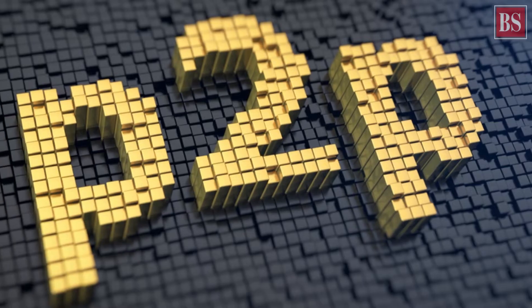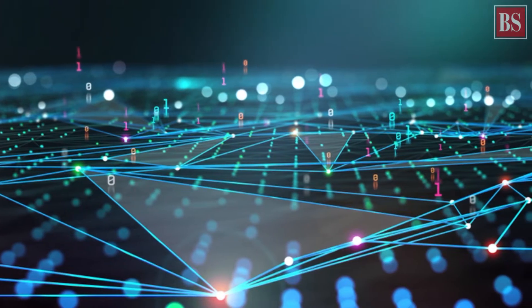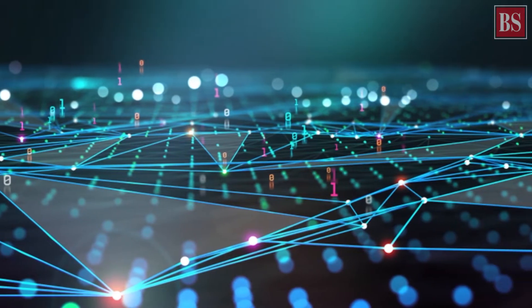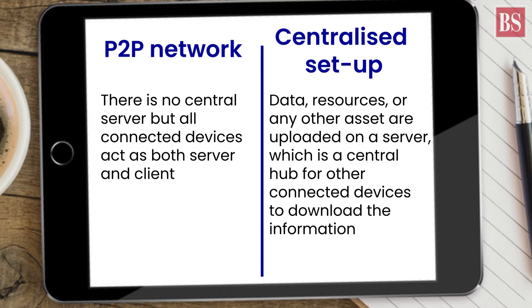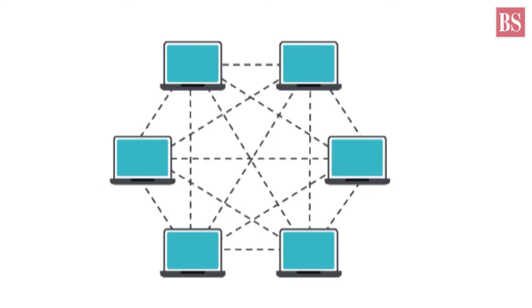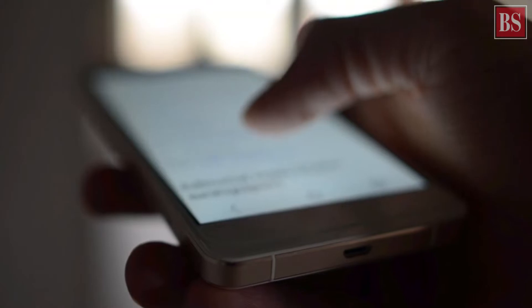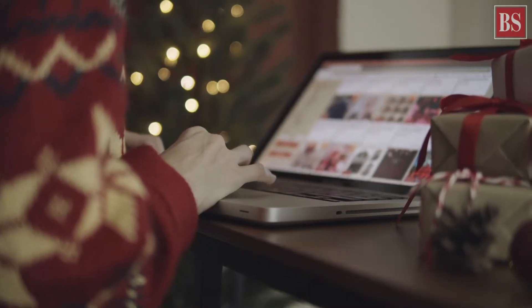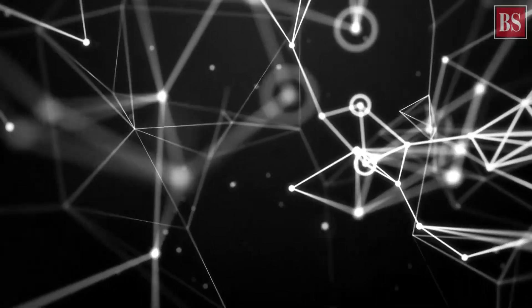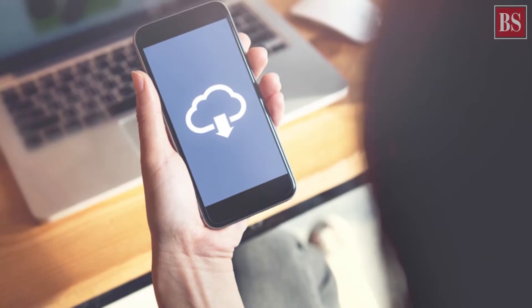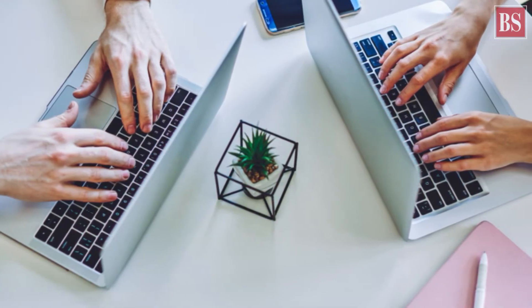The P2P network has its advantages and disadvantages. But first, let's understand how resource transfer is done on a P2P network. Both download and upload of information are performed differently than in a centralized structure. In a centralized setup, data resources are uploaded on a server, which is a central hub for other connected devices to download information. In a P2P network, there is no central server; all connected devices act as both server and client. When you download a file using a peer-to-peer network, it comes in parts from other peers connected to the same network that have the same file or a part of it. Simultaneously, the downloaded parts are seeded through your computer to other peers in the download queue.